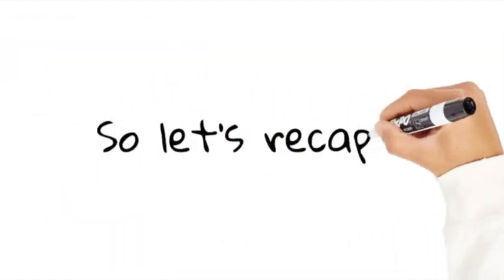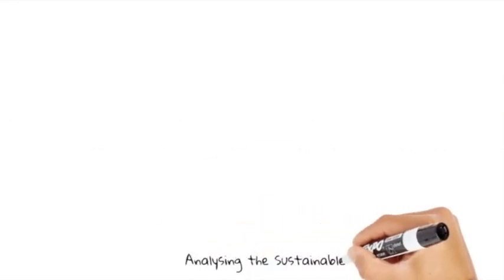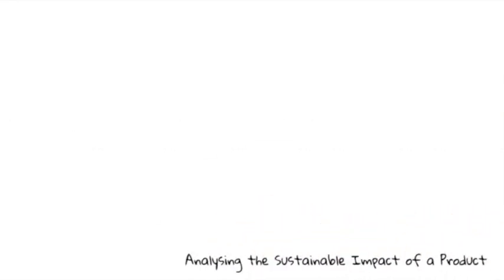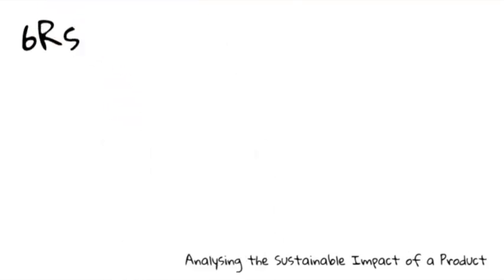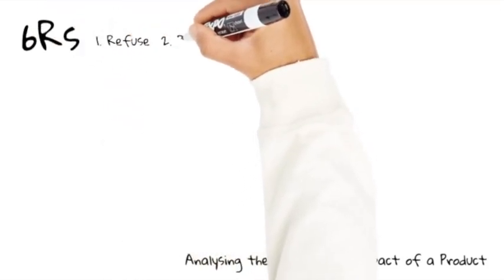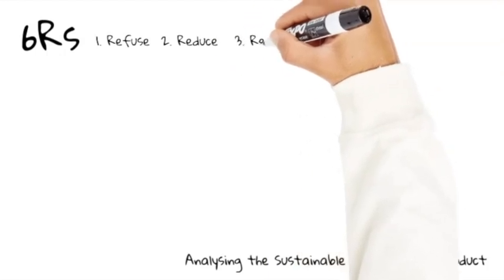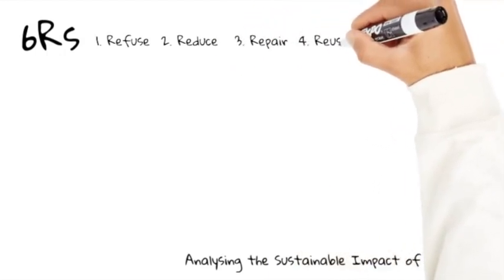So if we want to analyze the ecological impact or the sustainable impact of a product, we need to start off with our six R's of sustainability: refuse, reduce, repair, reuse, recycle and rethink or sometimes referred to as redesign. So our six R's are the actions that we could take to improve our sustainable impact of our product.